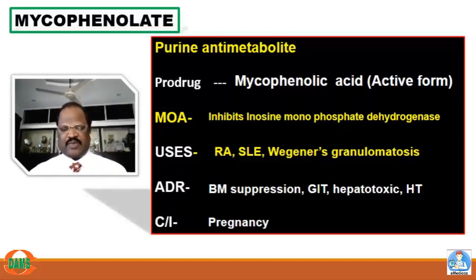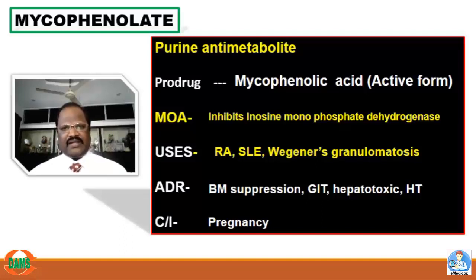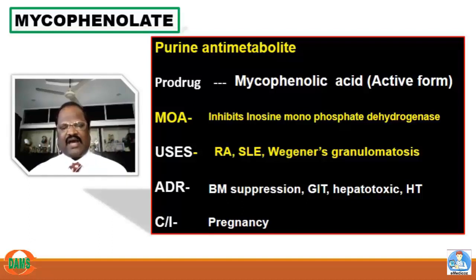DMARDs (disease-modifying antirheumatic drugs): the first important choice is methotrexate, followed by sulfasalazine, leflunomide, azathioprine, and mycophenolate. Others include chloroquine, hydroxychloroquine, and cyclophosphamide. The most commonly used DMARDs in practice are methotrexate, then sulfasalazine, leflunomide, mycophenolate, chloroquine, and hydroxychloroquine.